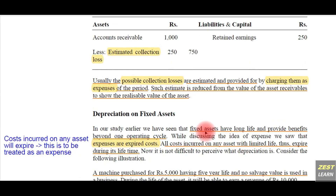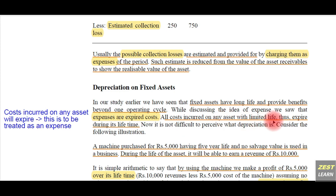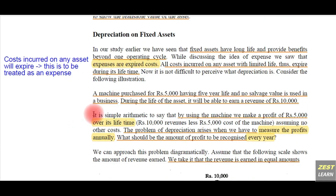The next type of indirect expense is depreciation. Fixed assets have a long life and are utilized for generating revenues in the business. The cost incurred on any asset with a limited life expires over its lifetime, and this expired cost must be shown as an expense.